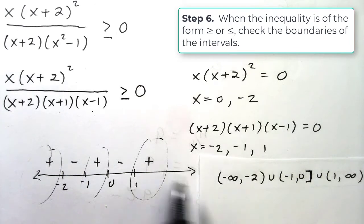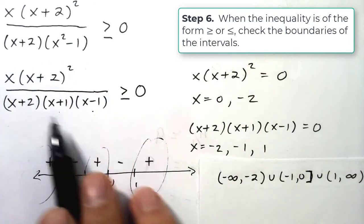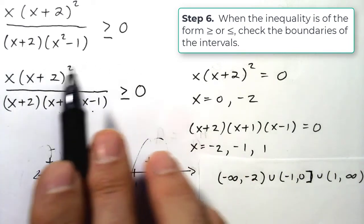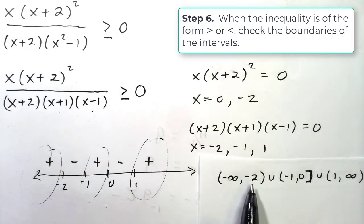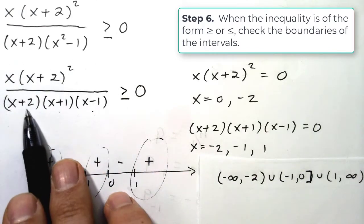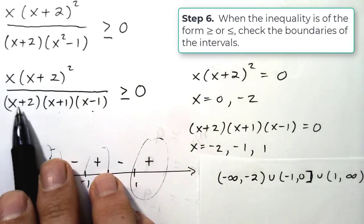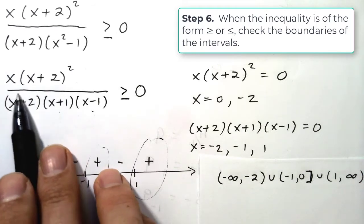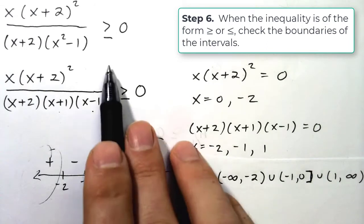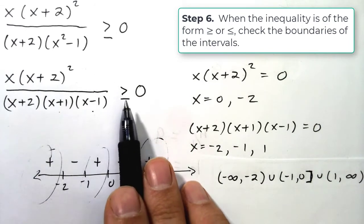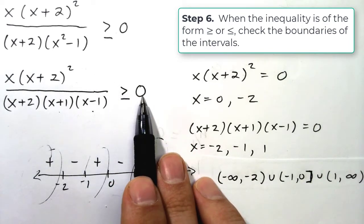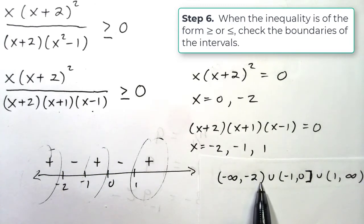So just take negative two, plug it in here. What do you get? Does this become a true statement or not? Well you'll see if I plug negative two into this expression, the denominator becomes zero. Notice this term right here, this factor becomes zero. And so that means the whole thing is undefined. So that means it's not greater than or equal to zero. So that means we don't include the negative two.